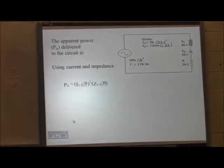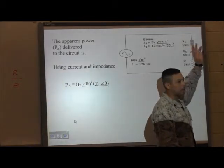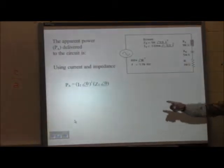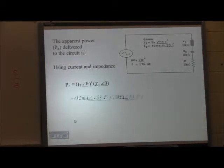So to get apparent power, everybody understands that that is the total sum of true power and reactive power. Yes? Whenever we can add the triangle, Pt and Px, I can get Pa.